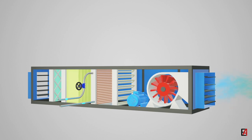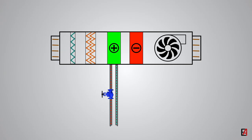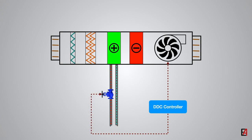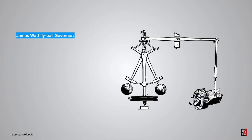Now we will see what is the control system and its different types. A control system is a system that controls the output by regulating its input. The first control system, called the flyball governor, was invented by James Watt in 1788 to control the speed of his steam engine by regulating the supply of steam to the engine.